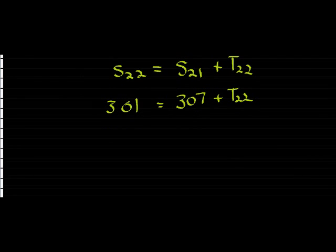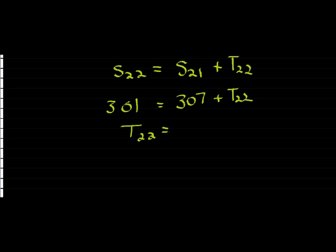In other words, I see that T22 is actually a negative value of negative 6. And there we go.